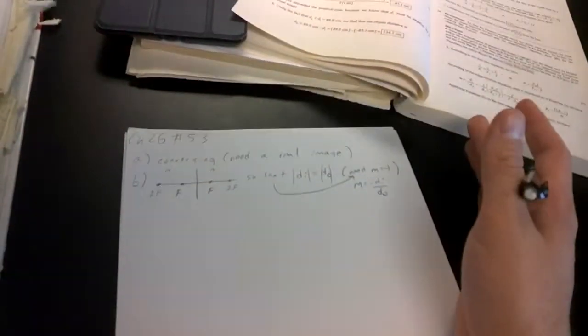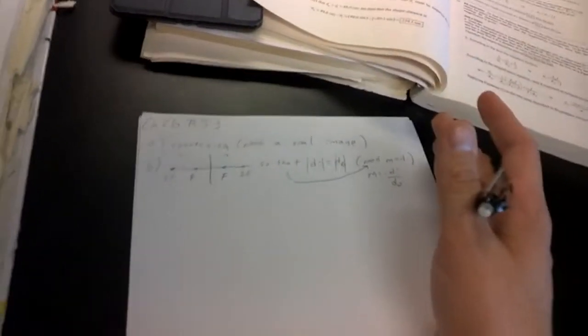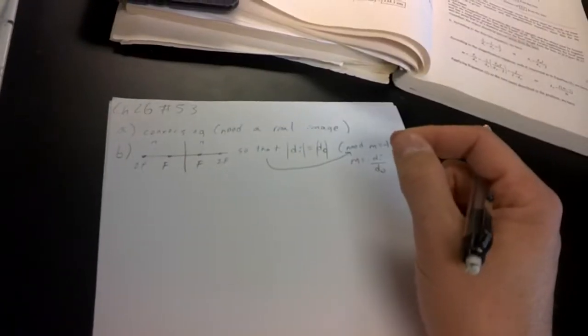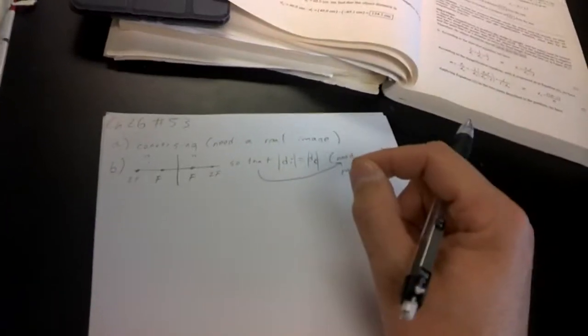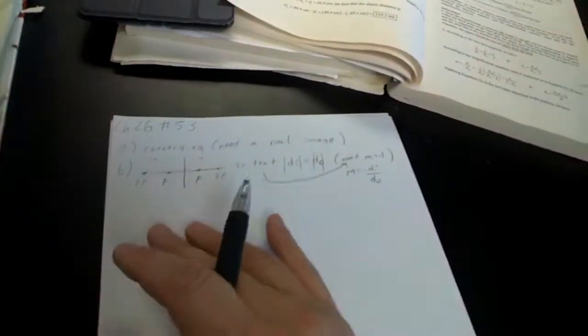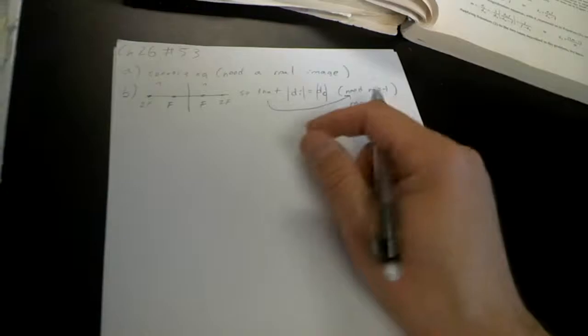I know for a fact without even doing anything yet that it'll have to be outside the focal length for that to happen. Because if we're inside the focal, even if we have a converging lens, it's just like a concave mirror - if we're inside the focal, the image will be virtual and then it won't work. So we've got to be outside of f.